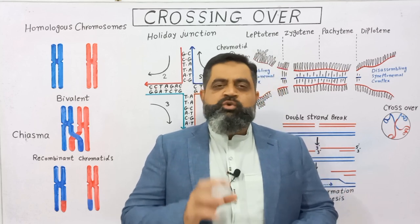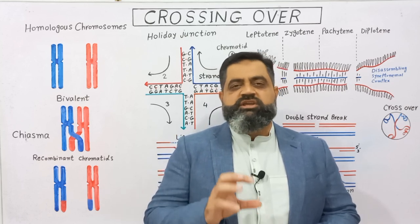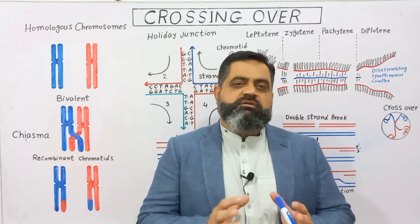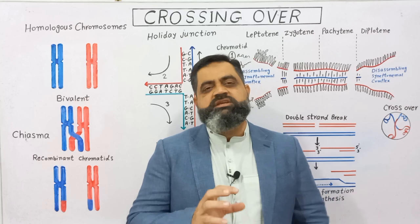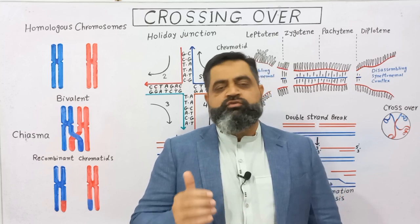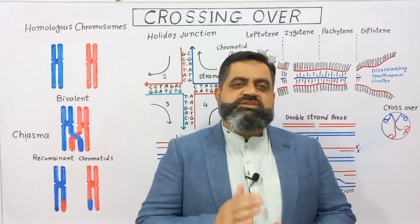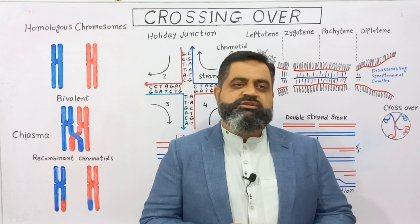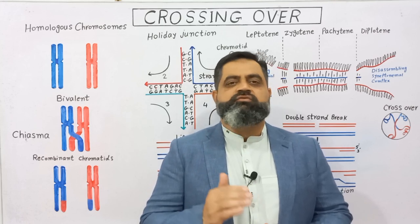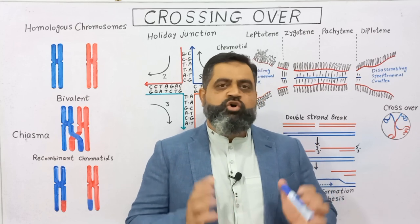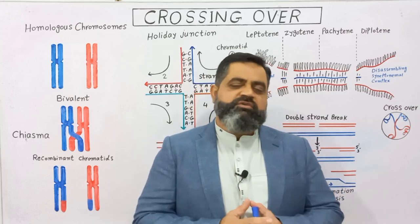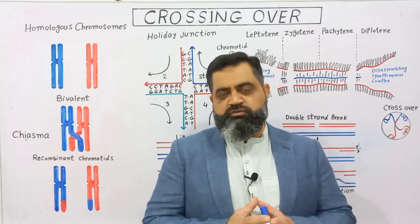During the process of meiosis there are different stages, and in the stage of prophase 1 this process takes place. In the human body there are 46 chromosomes present in each cell, and these 46 chromosomes are in the form of 23 pairs known as homologous pairs of chromosomes. Of these, 23 chromosomes come from your mother and 23 chromosomes come from your father, making up your genetic makeup in the form of 46 chromosomes.